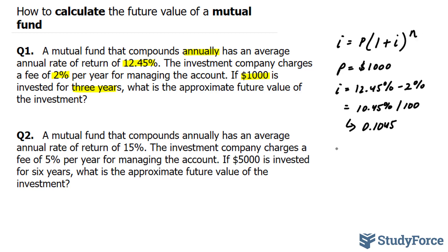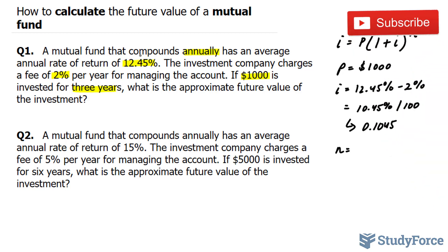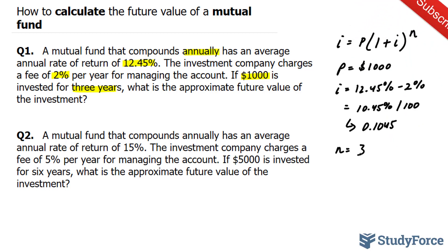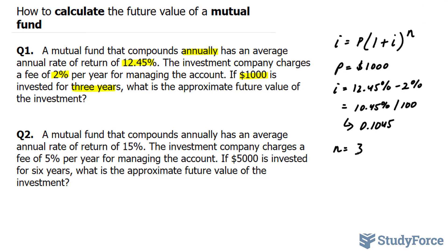Lastly, n, which is the number of periods, is equal to 3. We know that because we're told the investment is for three years and it compounds annually, so n equals 3. Now all I have to do is substitute these values into the formula.